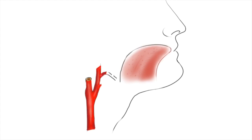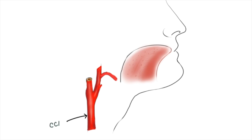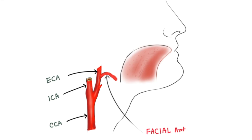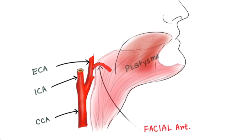Welcome to this video discussing the facial artery and its branches. Here in the picture you can see the common carotid artery, which divides into the internal carotid artery and external carotid artery. The facial artery originates from the external carotid artery and initially lies beneath the platysma muscle.